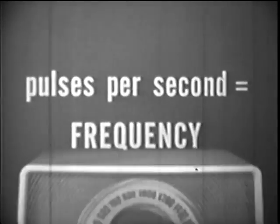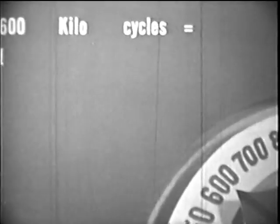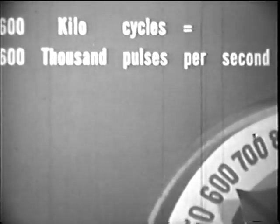Your radio lets only one frequency through at a time. At 600 kilocycles on your dial, for example, your radio receives electromagnetic energy at a frequency of 600,000 pulses per second.